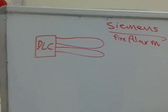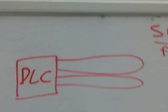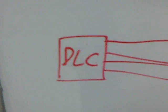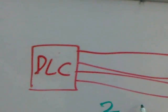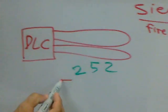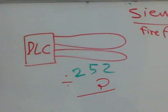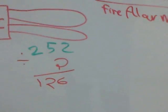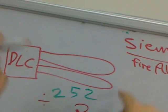Regarding the detector loop: each loop must have a maximum of 250 devices total. You can divide 250 by two, so it becomes 100 to 126 per loop.